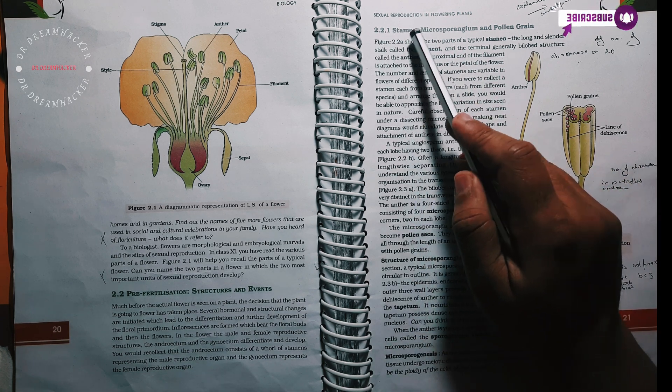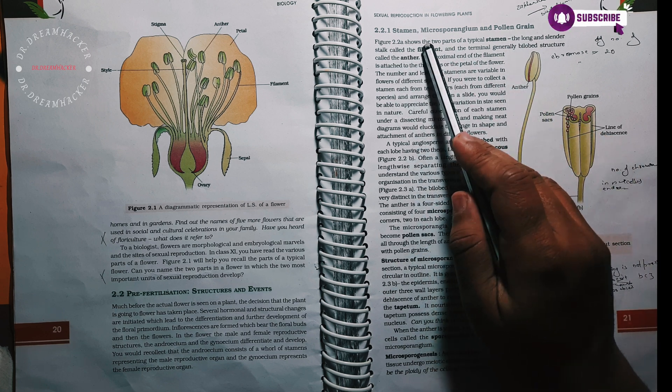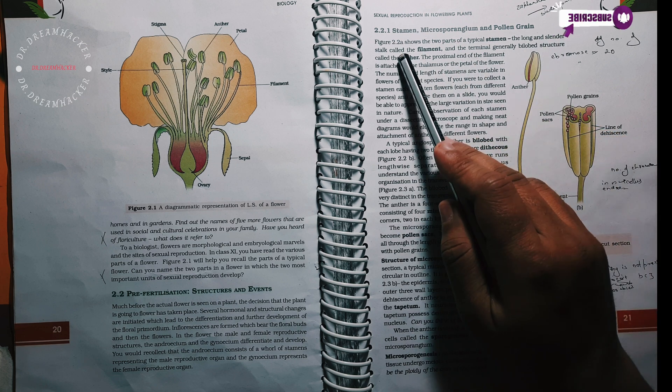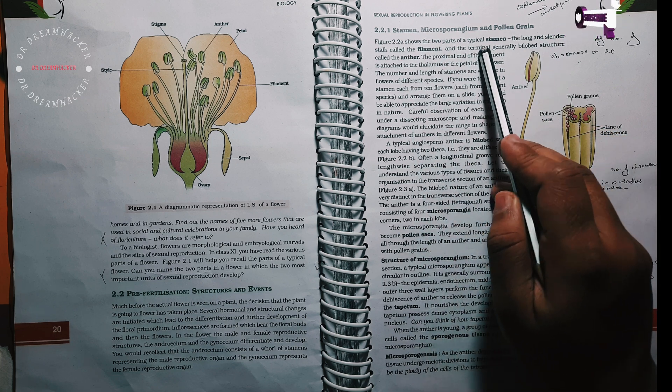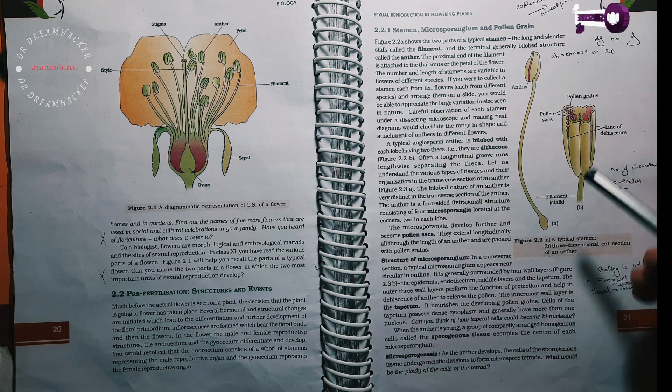2.2.1 Stamen, microsporangium and pollen grain. Figure 2.2 shows the two parts of a typical stamen: the long, slender stalk, the filament, and the terminal, generally bilobed structure called the anther. Anther, the filament.